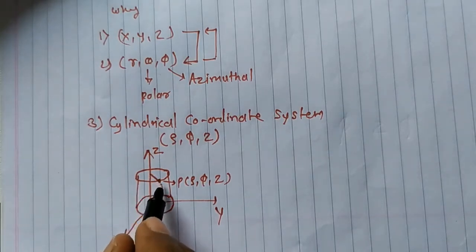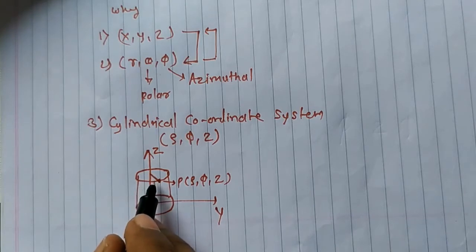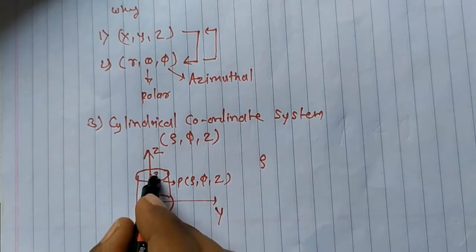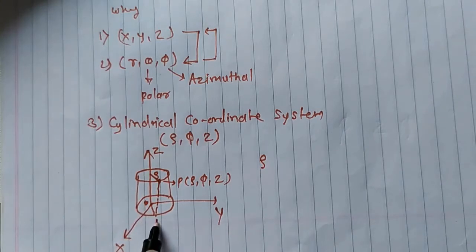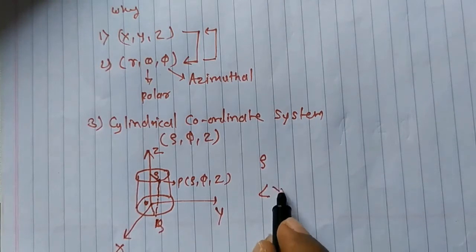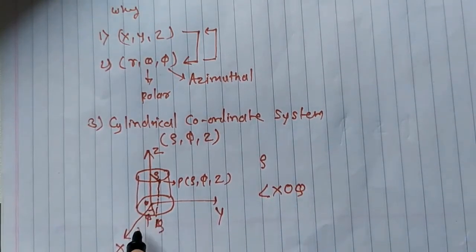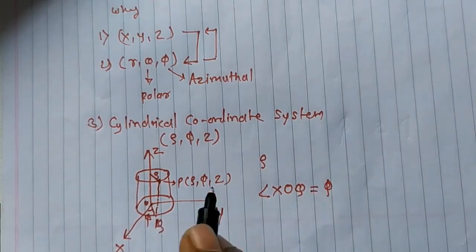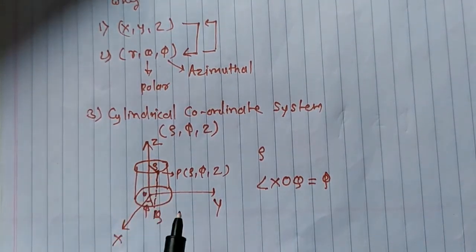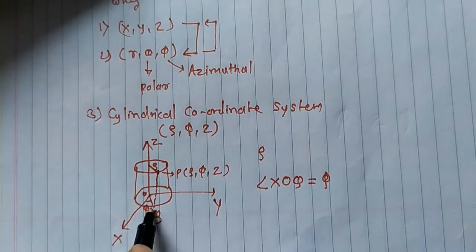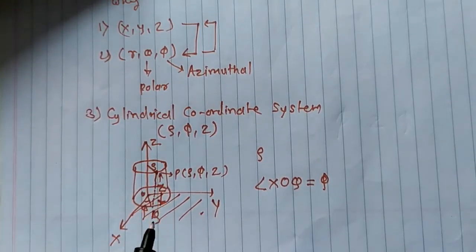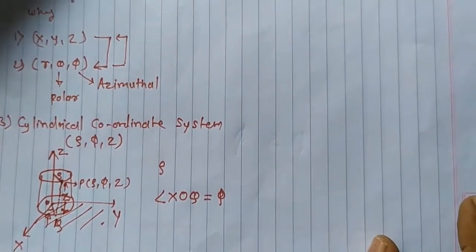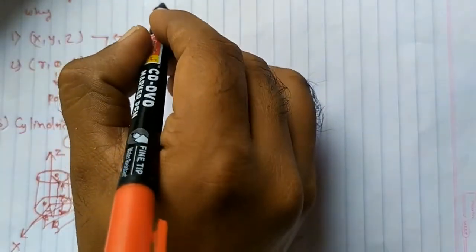Now if I look for the distance of point P from the z-axis — that is, the perpendicular distance from the z-axis — that will be the rho coordinate. Phi is determined by drawing a perpendicular onto the xy-plane and joining it with the origin O. Naming the projected point Q, the angle x-O-Q is phi. So this angle is phi, our second coordinate. The third one, z, is the distance of point P from the xy-plane, giving us the z coordinate.